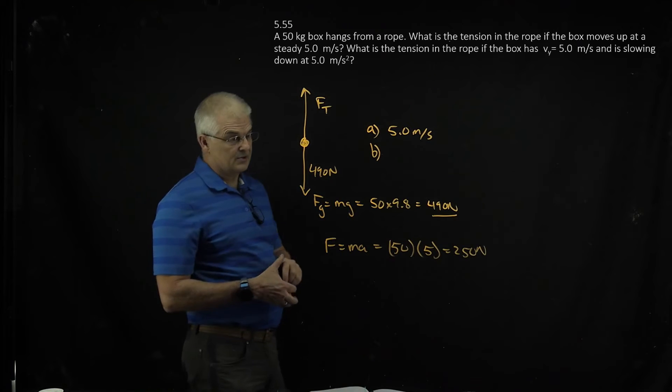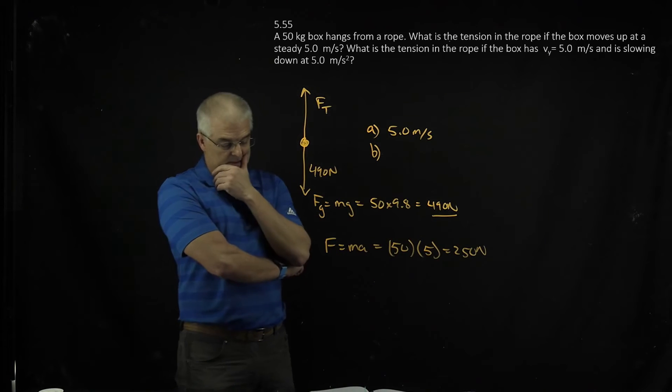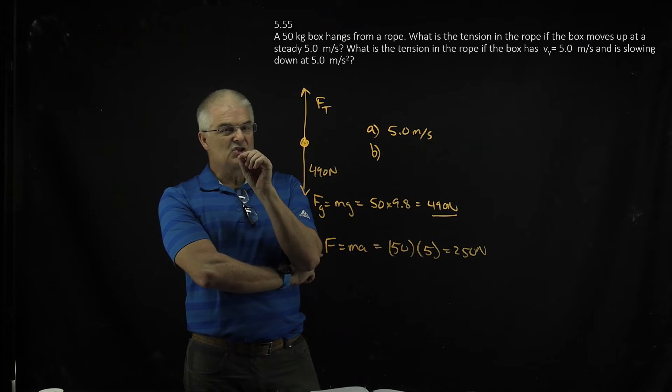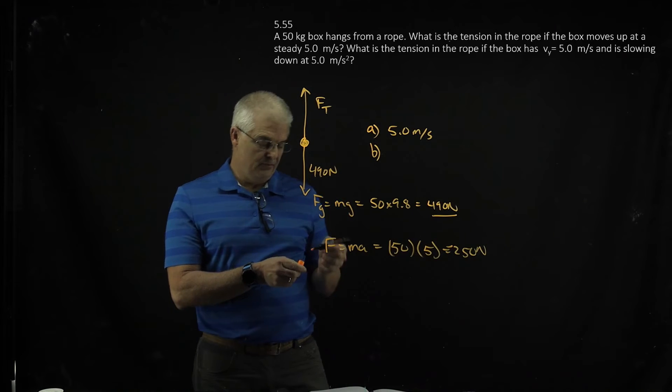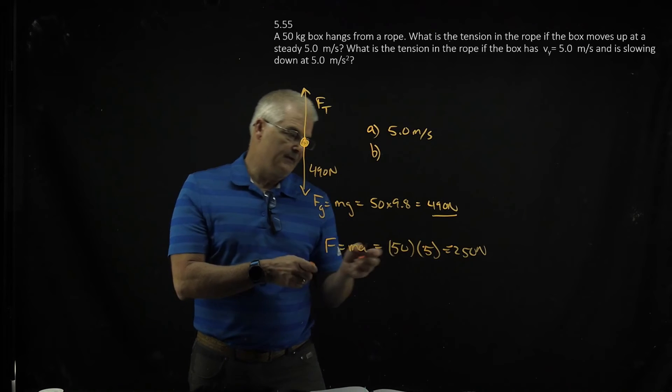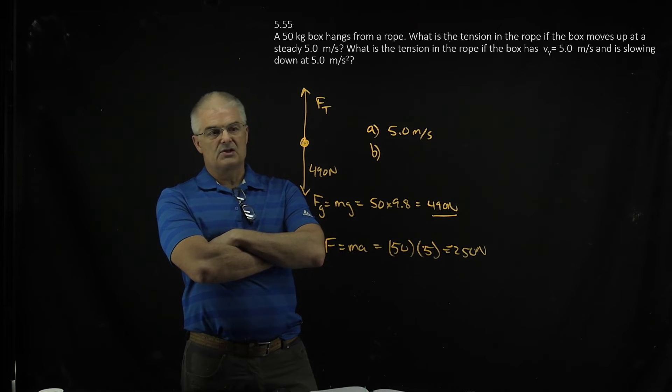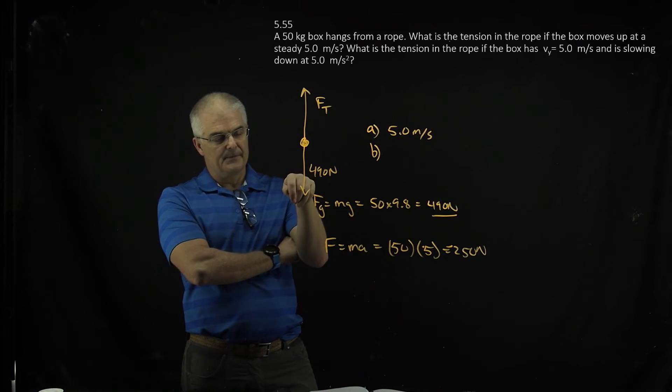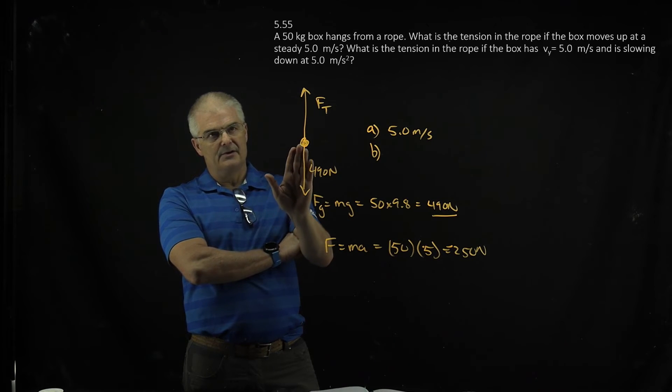Now here's the question that you have to ask yourself. Am I going to add these numbers or subtract these numbers? That's the trick on this. So let's think about the question. It is slowing down. So actually, technically, this would be negative 250 newtons. It's slowing down, because this is a negative 5 meters per second squared. And so since it's slowing down, that will reduce the tension on the string. So it's moving up, but it's slowing down.